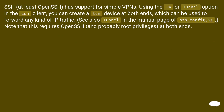SSH — at least OpenSSH — has support for simple VPNs. Using the -w (tunnel) option in the SSH client, you can create a TUN device at both ends, which can be used to forward any kind of IP traffic. See also 'Tunnel' in the manual page of ssh_config(5). Note that this requires OpenSSH and probably root privileges at both ends.